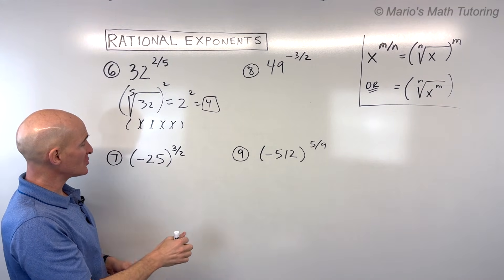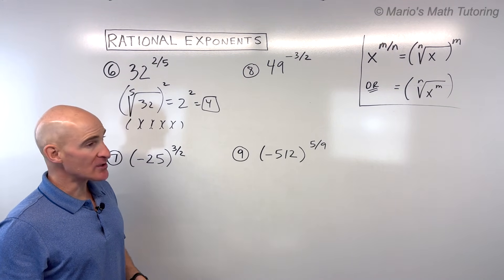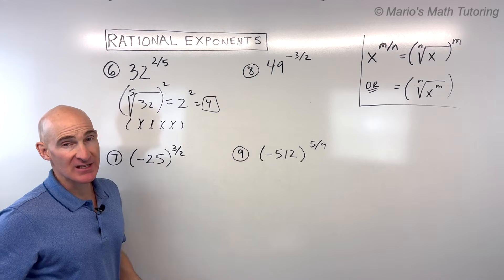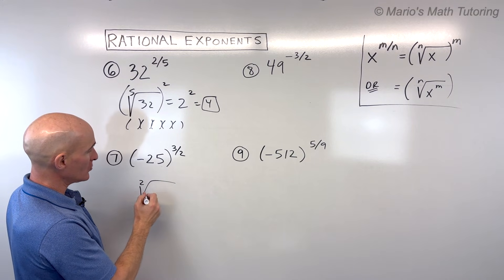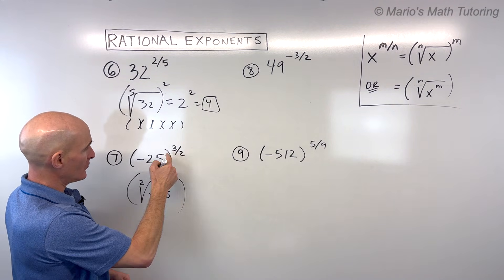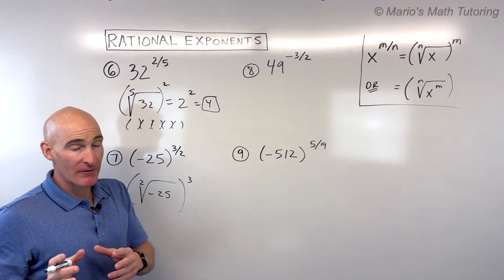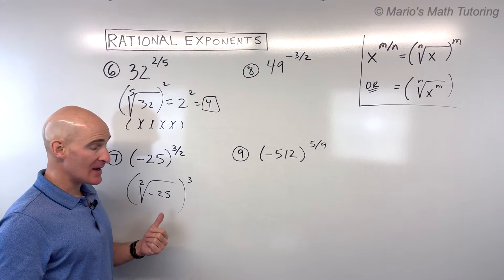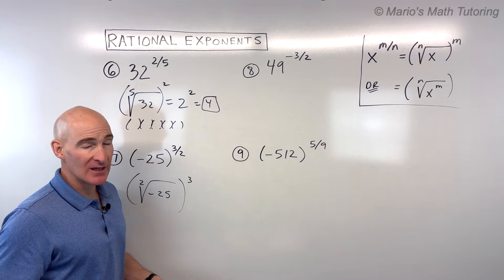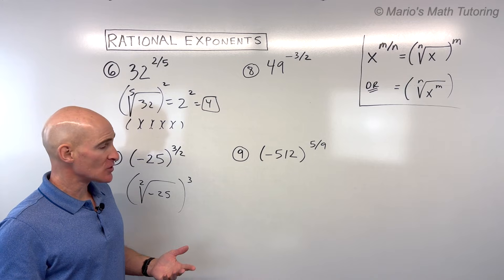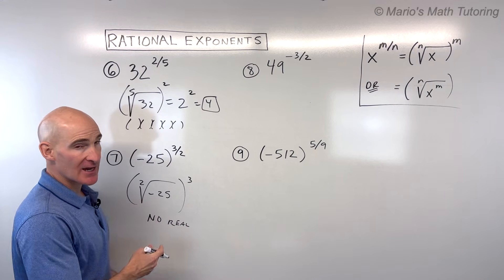For number 7, we have negative 25 to the three-halves power. Notice it's not the exponent that's negative — it's the base. The denominator 2 represents the square root of negative 25. But 5 times 5 is positive 25 and negative 5 times negative 5 is also positive 25, so we can't take the square root of a negative number without getting imaginary numbers. This one has no real solution.